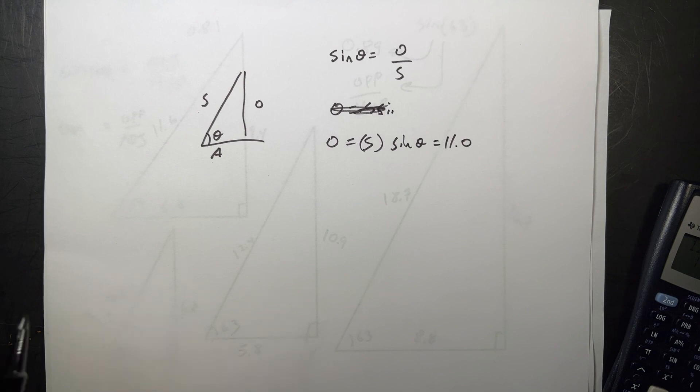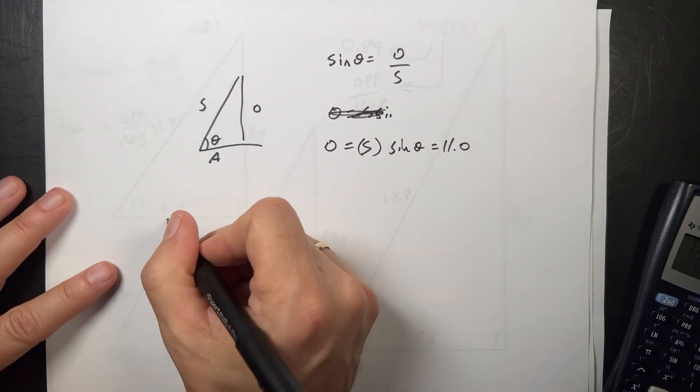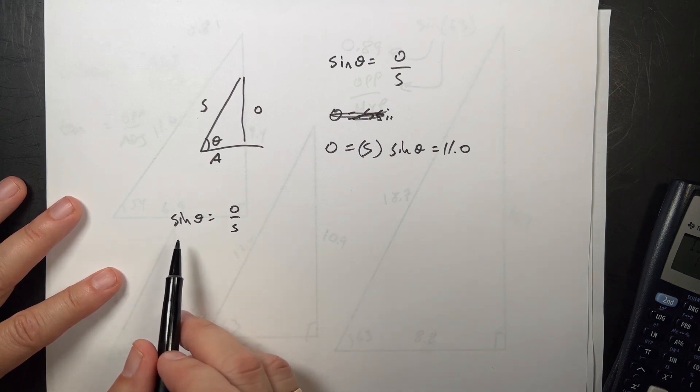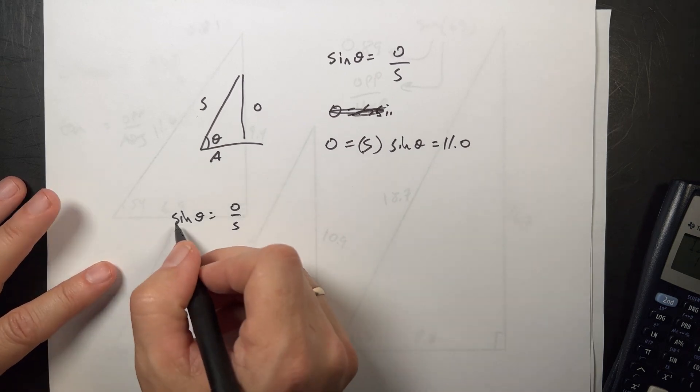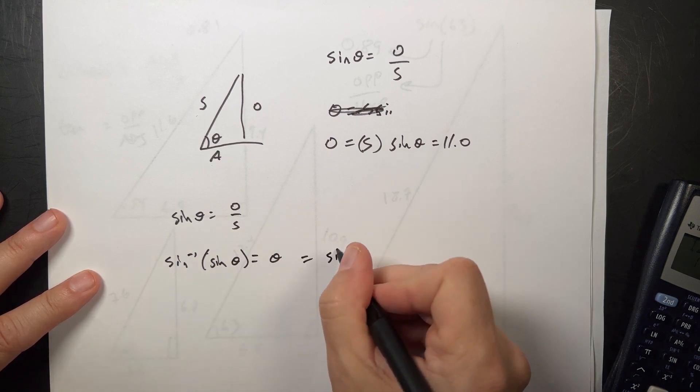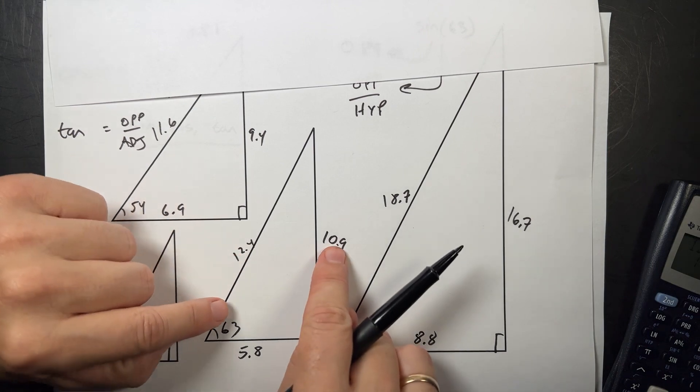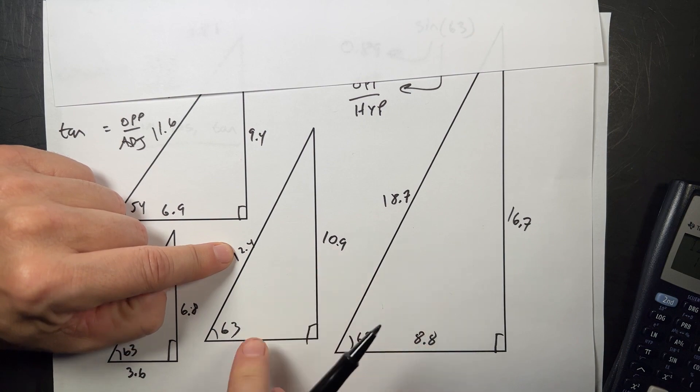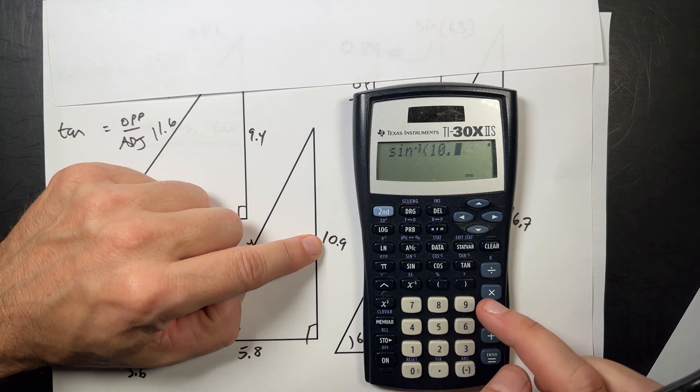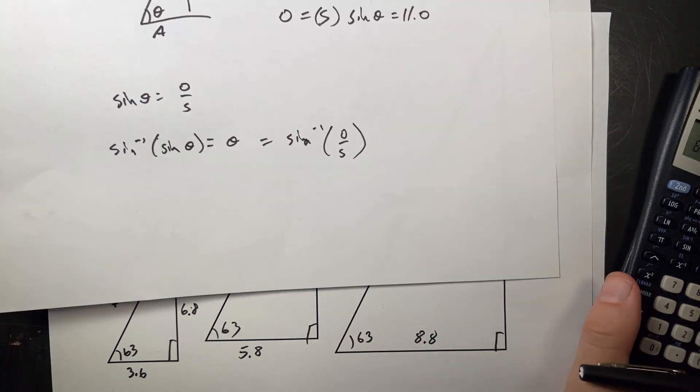Now you can also go backwards. We can do inverse sine trig functions. Suppose I know these two sides, I want to find the angle. Then I could say the sine of the angle is equal to O over S. How do you get theta all by itself? You can't divide by sine because it's not a number, it's an operation. So I have to unoperate it, and we do that with the inverse sine. If I take the inverse sine of both sides, the inverse sine of the sine is equal to theta, and that's equal to the inverse sine of O over S. So let's just check if that's true for this triangle. I'm going to take 10.9 divided by 12.4 and then take the inverse sine. I should get something close to 63. Inverse sine of 10.9 divided by 12.4, I get 61.5. So close. I'm happy, happy enough.